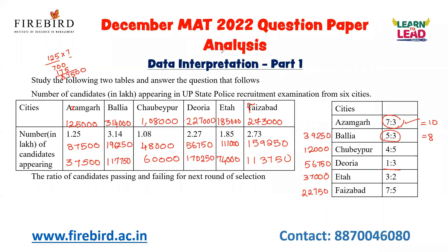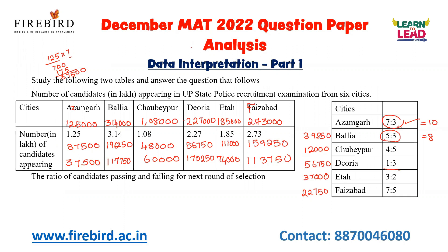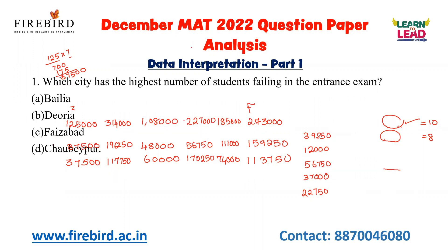I hope you now know how to solve this. Let us go to the first question. Note down these values as they will be helpful to solve the questions. The question asks which city has the highest number of students failing. Looking at our calculated values, 1,70,250 is the highest number of candidates failing, which is in the city Deoria. So the answer for the first question is Deoria.